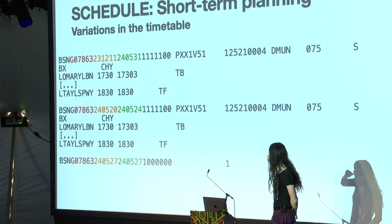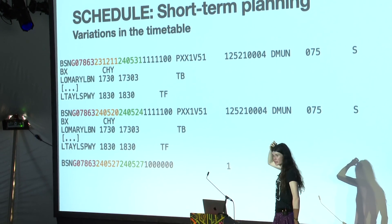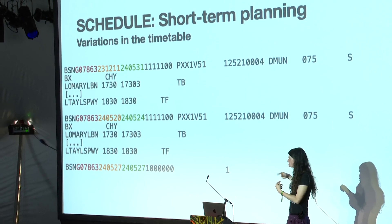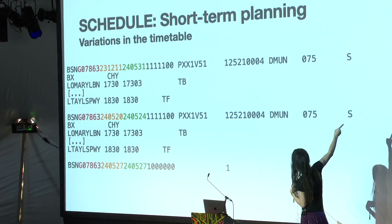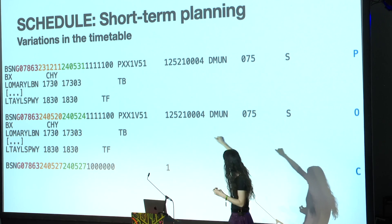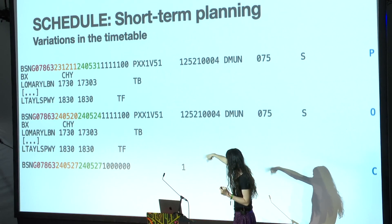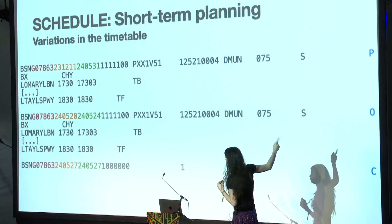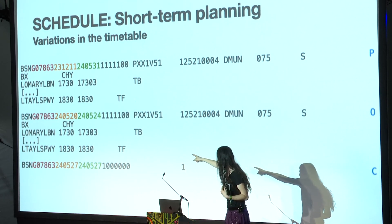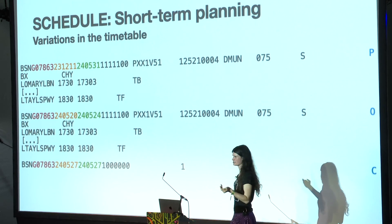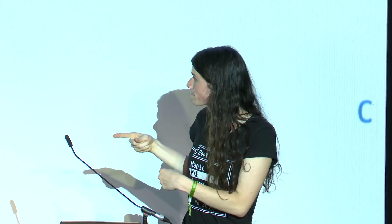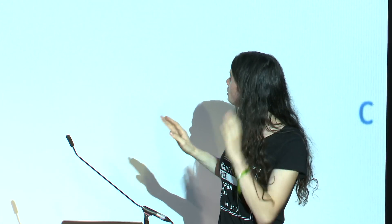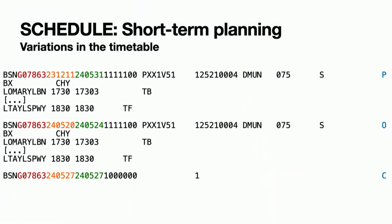The feed has a layered structure to handle things like engineering works or Christmas where they're not running normal trains. You have the main schedule, marked with a P for permanent. Then you have one or more overlays with the same ID but slightly different details, which replace the permanent schedule on a more limited set of dates. There's also a C for cancellation, which just means the train's not running that day — not necessarily a live cancellation, but a train that was never meant to run on that particular day.